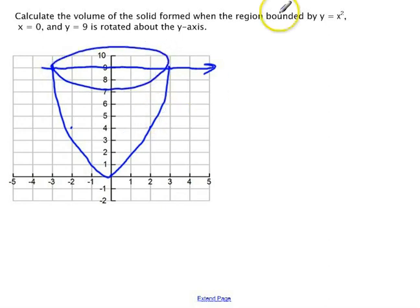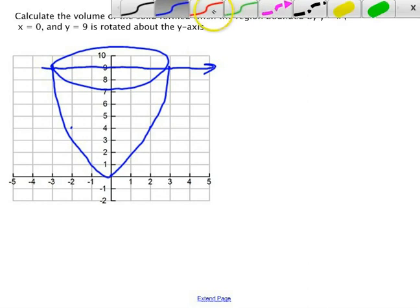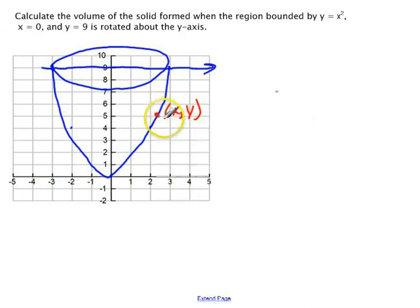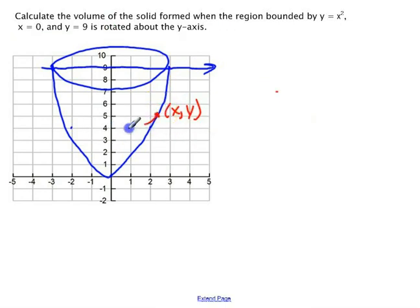So I'll pick my random point x, y, and that's where I'll draw my representative disk. And notice that this time, my thickness of my disk is not dx,